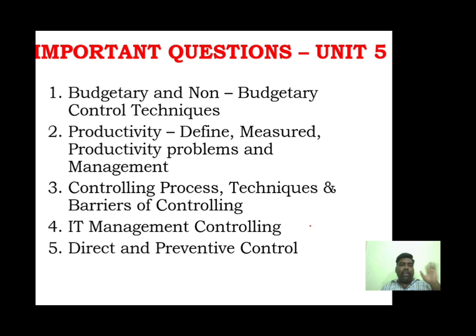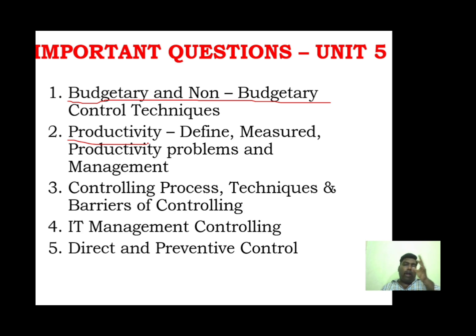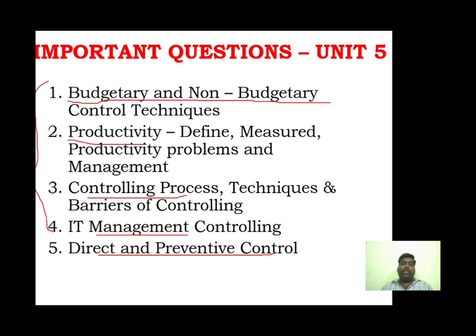Unit 5 — control techniques and the control process are very very important. In this unit, 90% of the questions are on budgetary and non-budgetary control techniques. Productivity — what is it, how do you measure it, how do you manage it — is also a very important question. Controlling process, direct and preventive control are also key. Definitely one question from Unit 5.